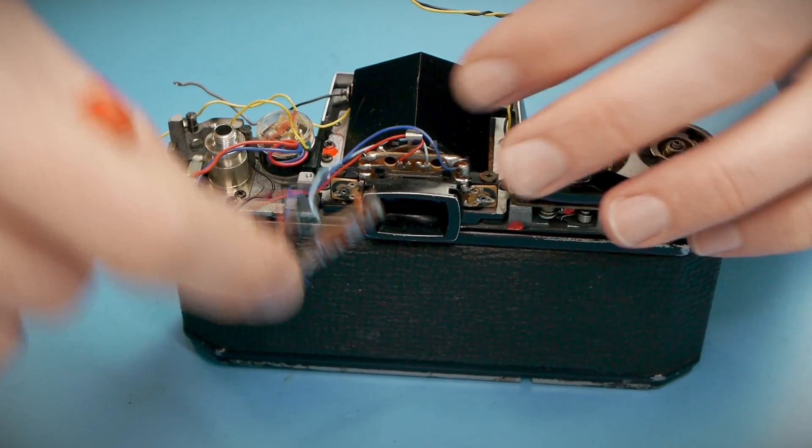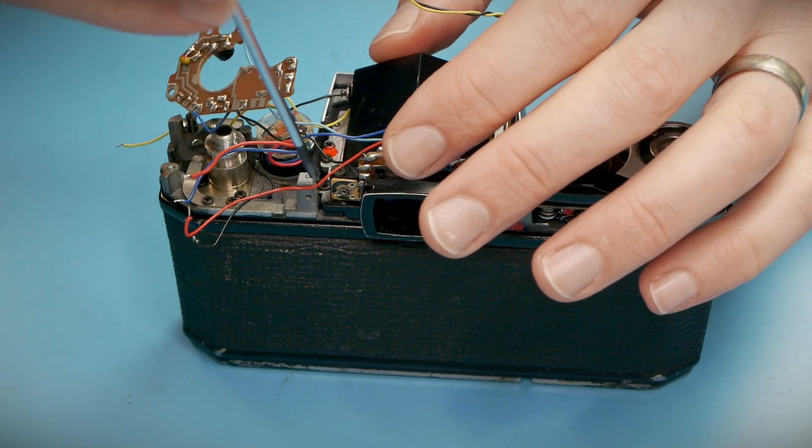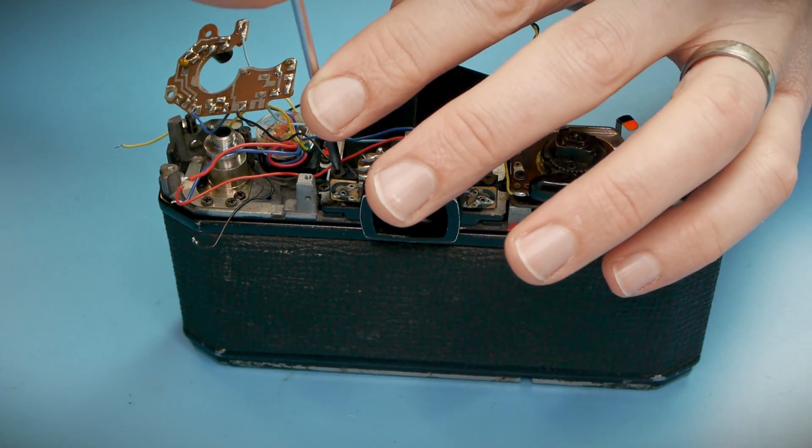Now I can remove two screws for the eyepiece and the main hub of the light meter circuit can come out of the camera.